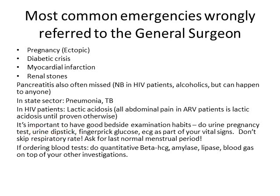A urine dipstick will show blood if there's a renal stone — and if there's severe colicky pain and lots of blood in the urine, you can order a spiral CT scan to check for renal stones. You can also pick up kidney or bladder infections, which can cause severe abdominal pain. A finger-prick glucose is a very quick way to check blood sugar — you really have no excuse for missing DKA. The dipstick is about 20 rand, the pregnancy test about 20 rand, the glucose about 20 rand — so we're up to 60 rand of special investigations for a patient on a budget.